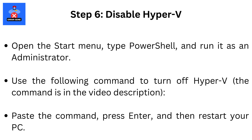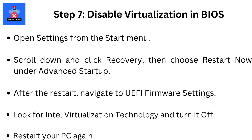Step 6: Disable Hyper-V. Open the Start menu, type PowerShell and run it as an administrator. Use the following command to turn off Hyper-V — the command is in the video description. Paste the command, press Enter, and then restart your PC.